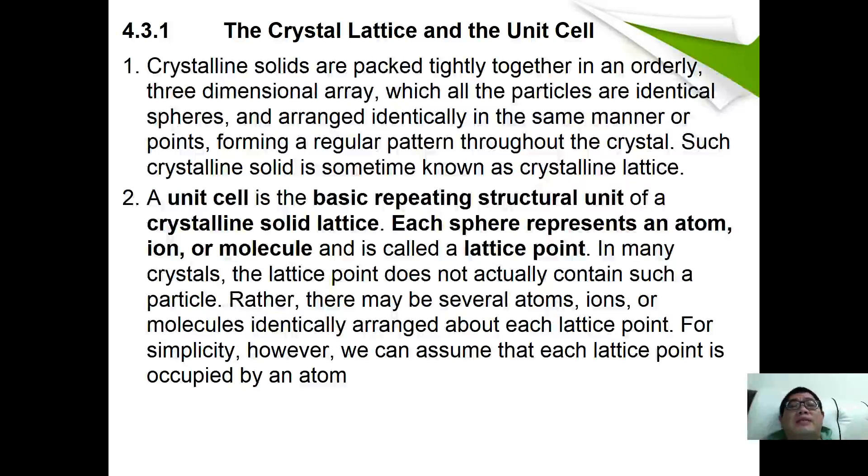We need to understand what is a crystal lattice and unit cell. Crystalline solids are packed tightly throughout in an orderly three-dimensional array, where all the particles are identical spheres and are arranged identically in the same manner. Such crystalline solid is sometimes called a crystalline lattice. A unit cell is the basic repeating structural form of the crystal solid lattice. Each sphere represents an atom, ion, or molecule and hence is called a lattice point.